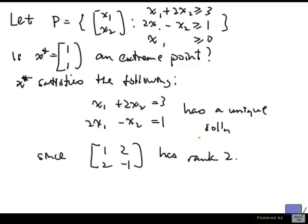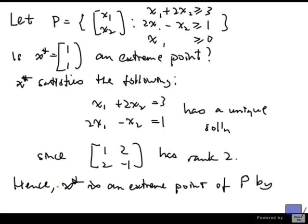And it's easy to say that this is rank 2 because the determinant is non-zero. Hence, x star is an extreme point of P by the previous theorem.